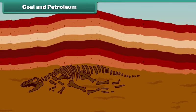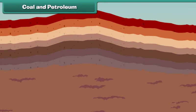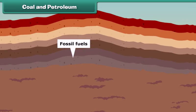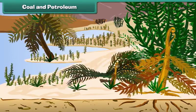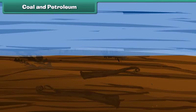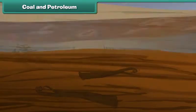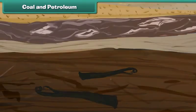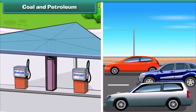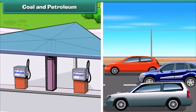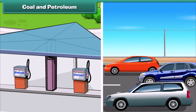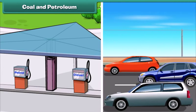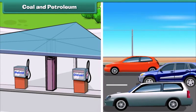Coal and petroleum are fossil fuels which take years to form. They are made from trees which get buried in the soil. They are non-renewable because they are limited in supply and can get exhausted by human overuse.